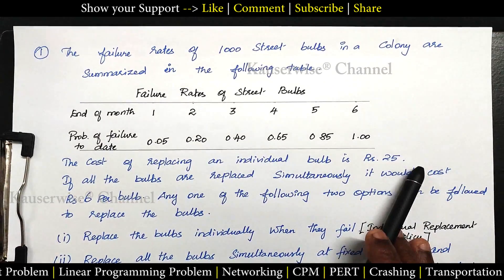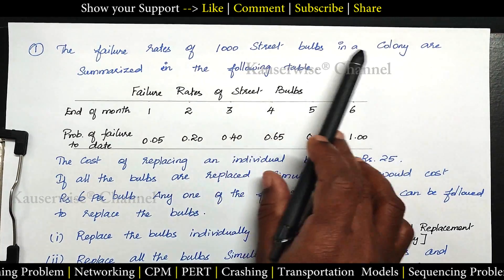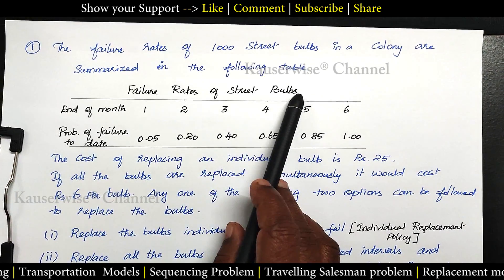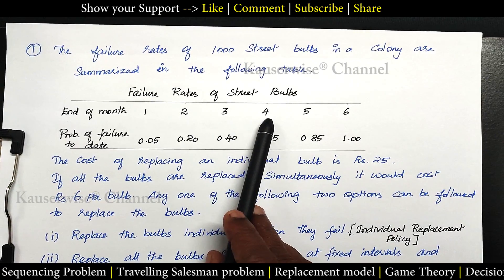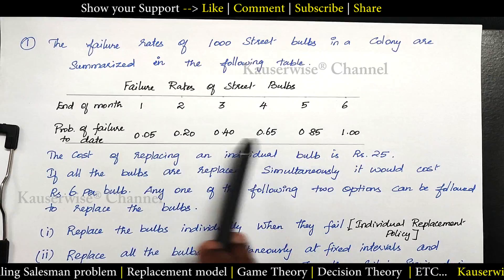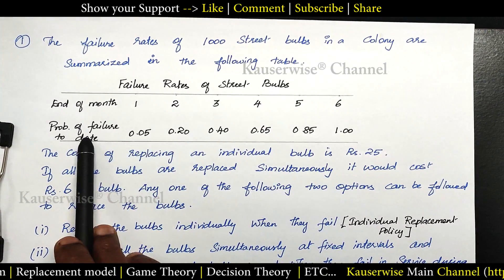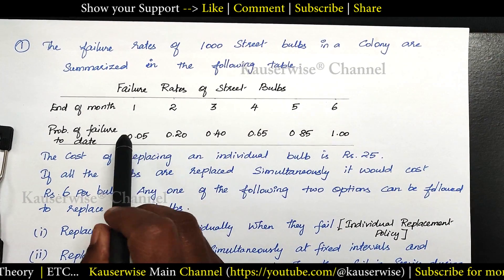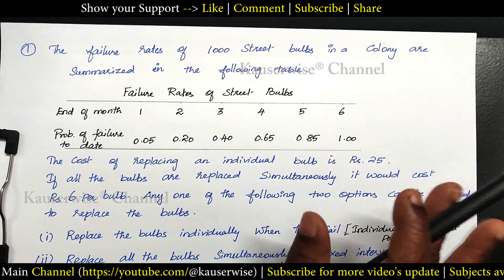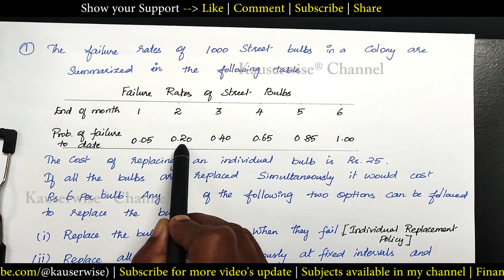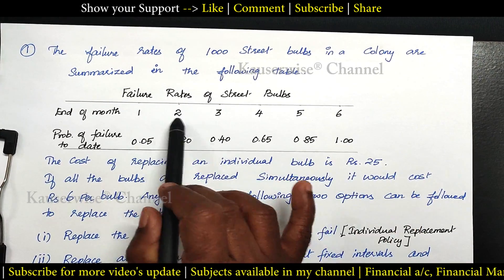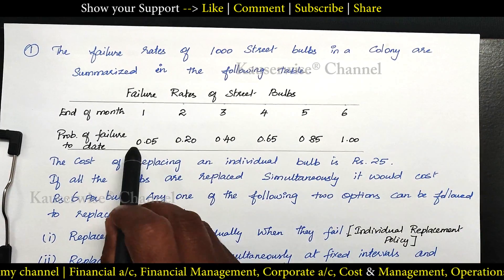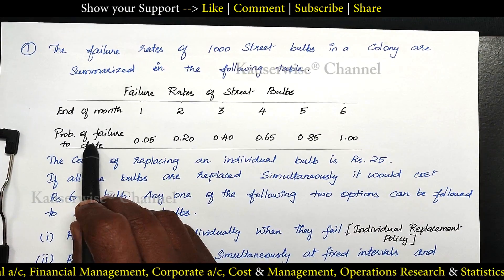Now let's see the problem. The failure rates of 1000 street bulbs in a colony are summarized in the following table. Here we have failure rates of street bulbs at the end of first month, second month, third month, fourth month, fifth month and sixth month. This is the probability of failure to date and here they have given cumulative probability for each and every month separately. We need to find out separately what is the probability at the end of first month, second month individually — for that we need to find out the difference. The difference is called probability at the end of each and every month.